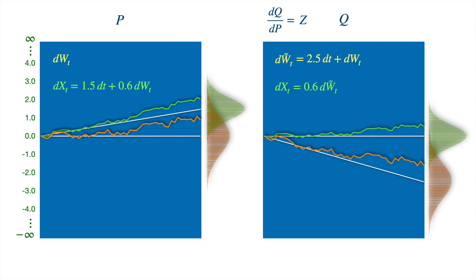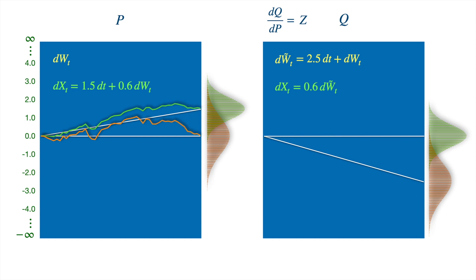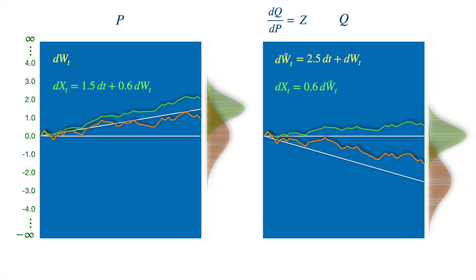Everything seems expected. So the random processes X and W under measure Q have downward drifts compared to their values under measure P. It would be good to predict how the processes will look like under Q every time we show a new realization of W and X under P. So let's see another realization — now time to predict how these will look like under Q. The processes are drifting downwards compared to what we see on the left-hand side. Also notice the gap between X and W is bigger under Q.